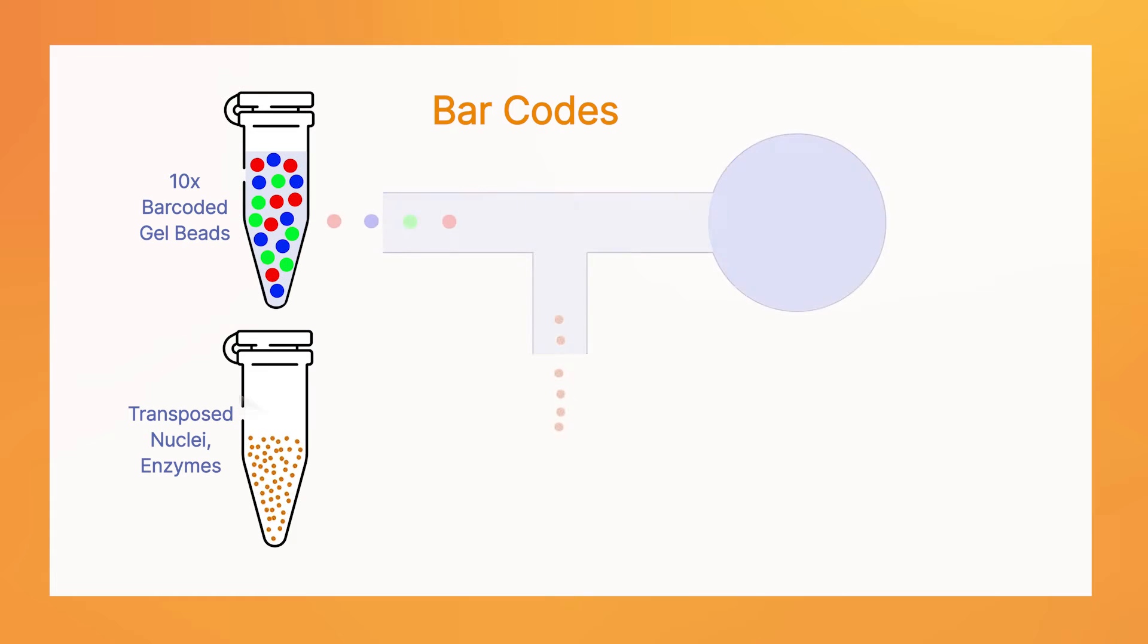The 10X Multi-Ome approach uses an instrument to create an emulsion. Single cells, or nuclei, are isolated into droplets which contain a bar-coded bead.